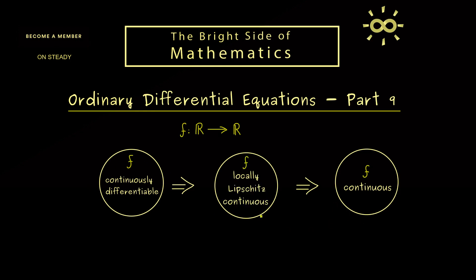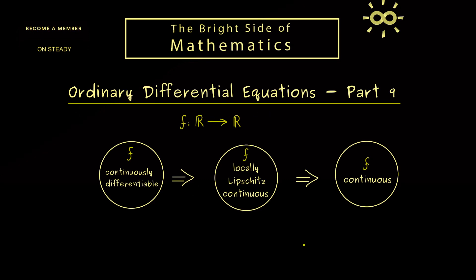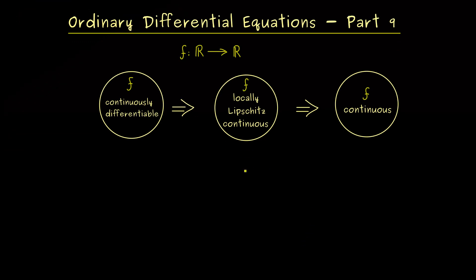More concretely, the notion we will now define is that f is a locally Lipschitz continuous function. At this point you should remember that for these three properties we have these implications. It turns out that this new middle ground is exactly what we need to solve ordinary differential equations in a unique way. Let's go to the definition of this Lipschitz continuity.